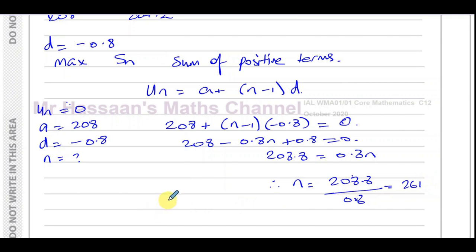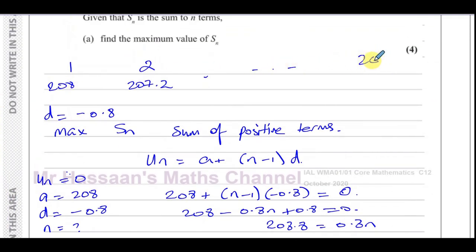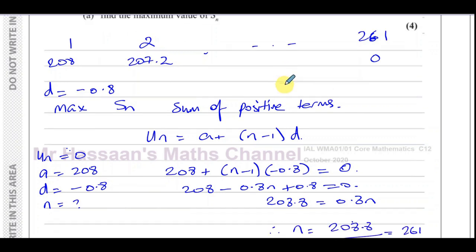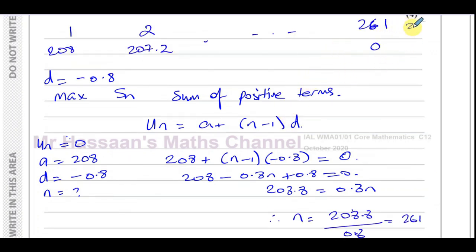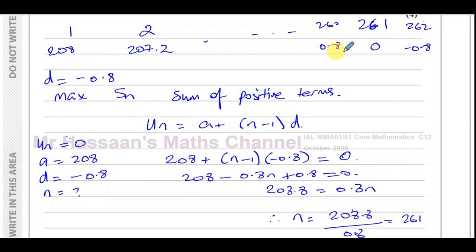The 261st term is 0. So adding terms up to the 261st gives us the maximum sum. I'll use the formula Sn equals n over 2 times (a plus l), where l is the last term. Taking n as 261, the first term is 208 and the last term is 0. So S261 equals 261 over 2 times (208 plus 0), which is 261 over 2 times 208. Using the calculator: 261 divided by 2 multiplied by 208 gives 27,144. Using n equals 260 would give the same answer.